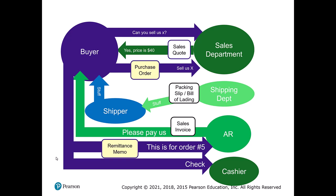This looks kind of complicated, but if you walk through it, it's actually fairly straightforward. Let's start at the top and work our way down. First, we start with a buyer who comes in and asks if we can sell something to them. The answer could be no — it might be that we only have a different variety, they're looking for a light coffee bean and we only have decaf, or we don't have the right amount, or the right timing.